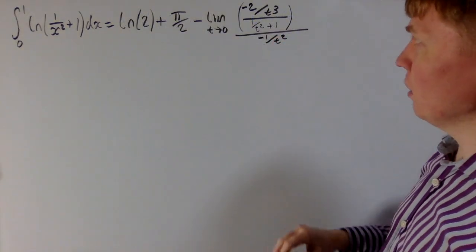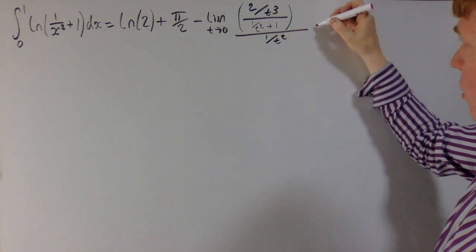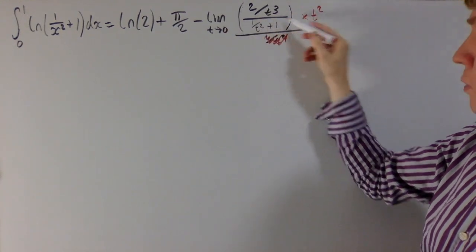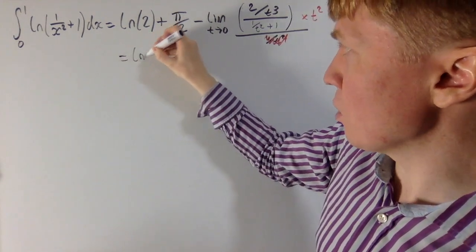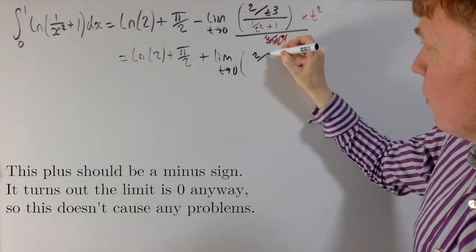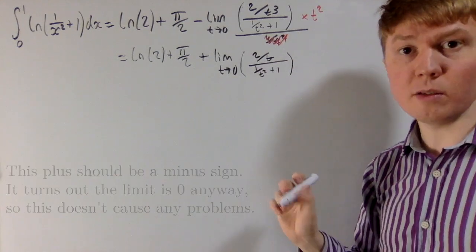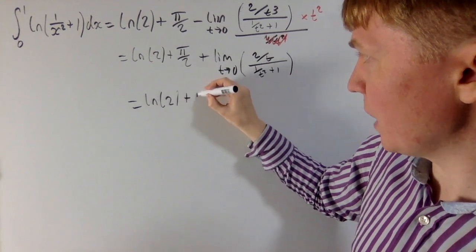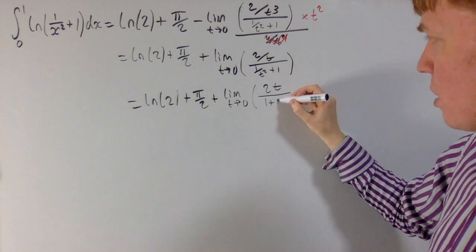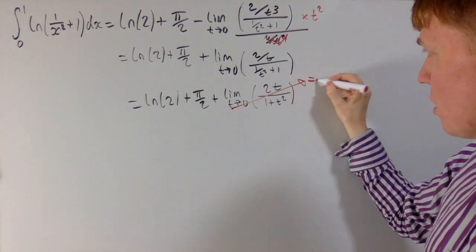The two negatives cancel, and dividing by a fraction is the same as multiplying by the reciprocal, so we're multiplying by t squared. Multiplying top and bottom by t squared throughout, we get the limit as t goes to 0 of 2t over 1 plus t squared. The limit as t goes to 0 of this is just 0 over 1 plus 0, which equals 0. So after all that work, this term just gives us 0.